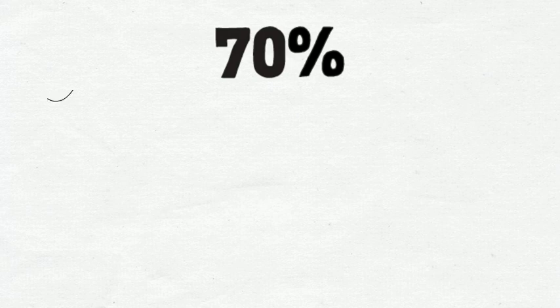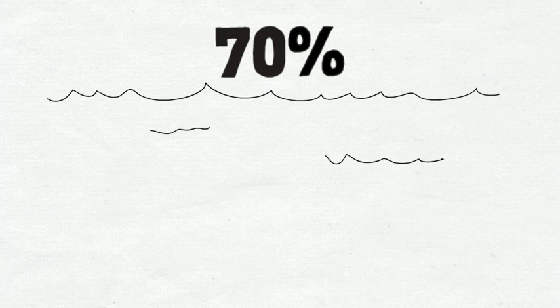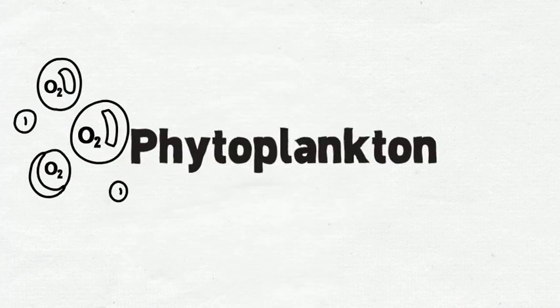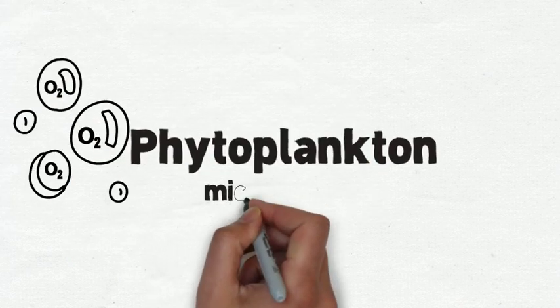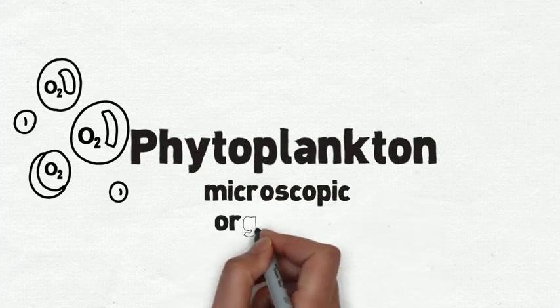Seventy percent of the world is made up of seas and oceans. These bodies of water are also where the majority of our oxygen is produced, thanks to phytoplankton, microscopic organisms that float in the water and feed exclusively on inorganic substances.